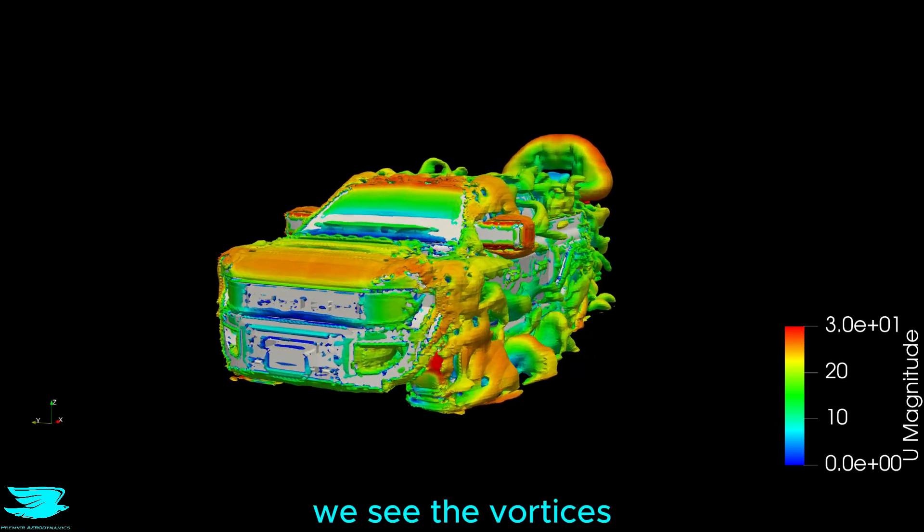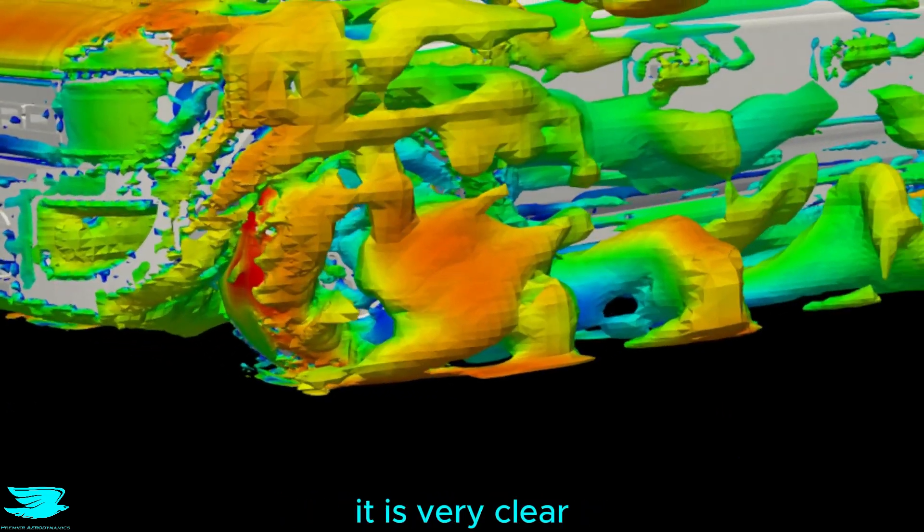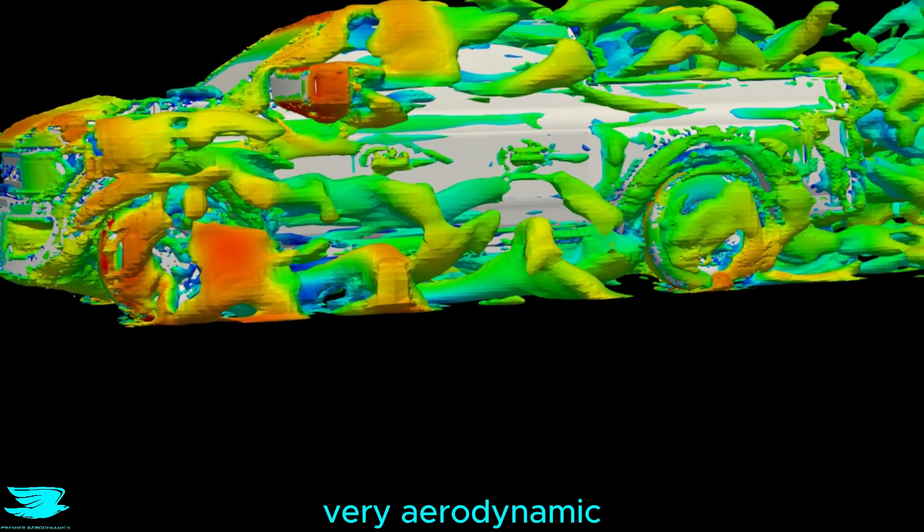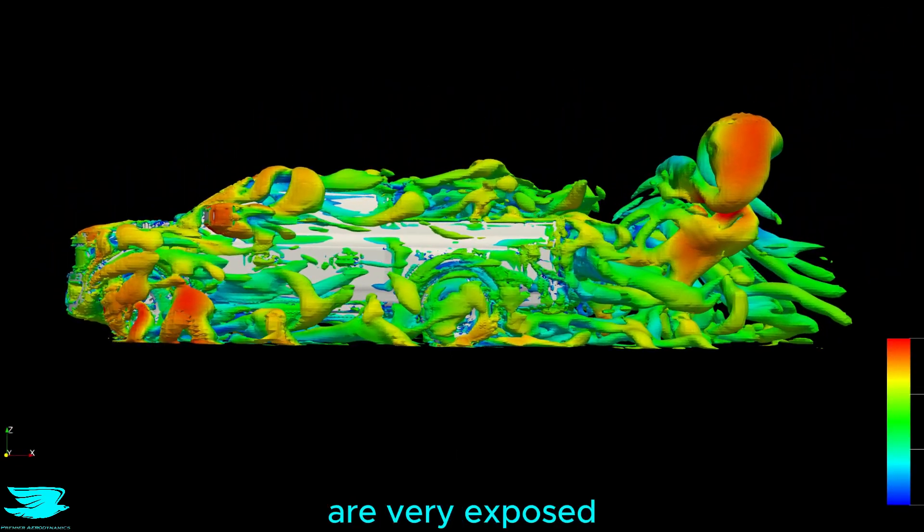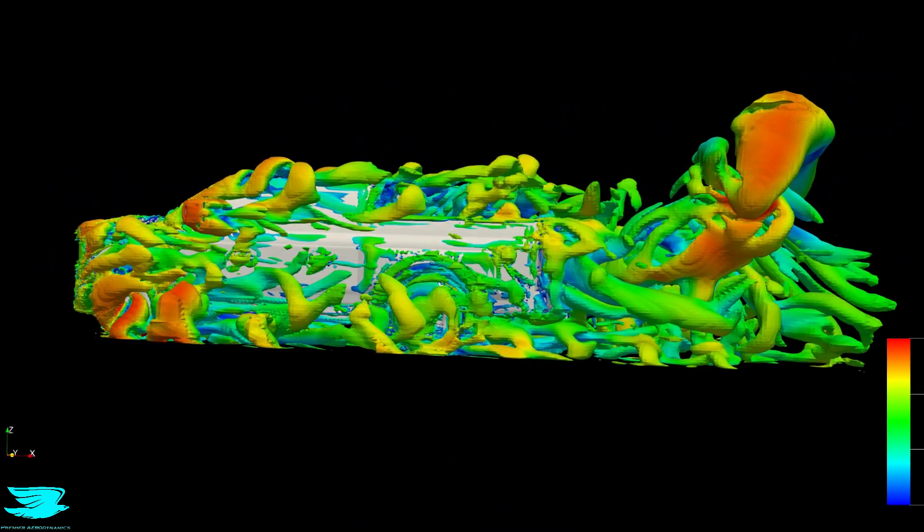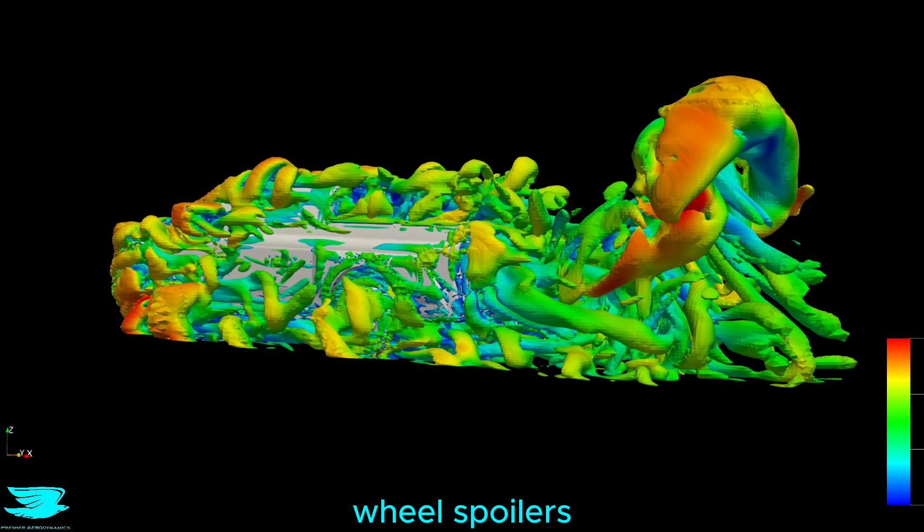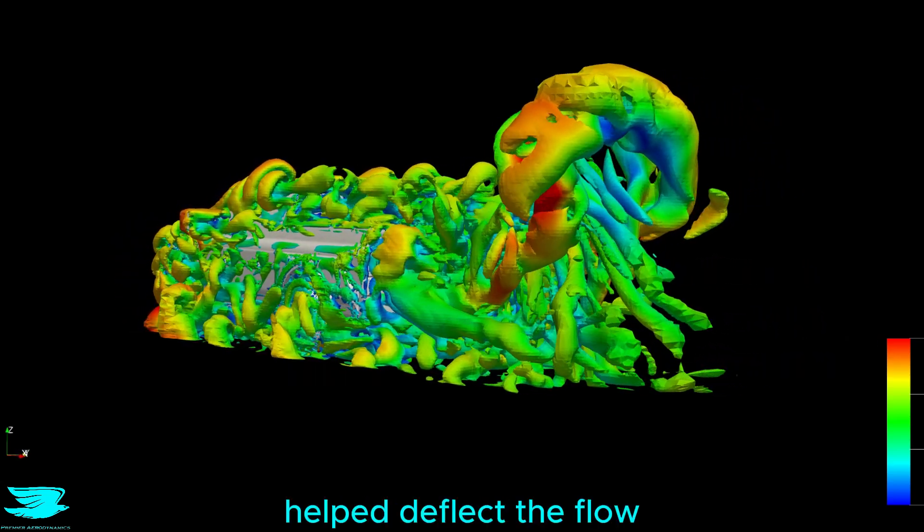In this video, we see the vortices being shed off the car. It is very clear that the front wheels are not very aerodynamic here. That is partly because they are very exposed, because this is a utility car, and partly because there are no wheel spoilers, which would have helped deflect the flow and reduce the wake.